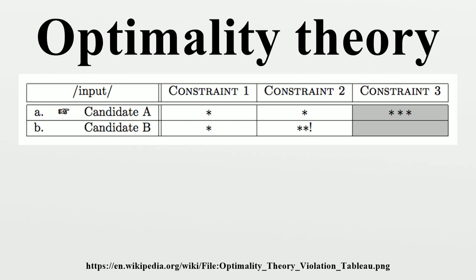The tableau for cat+Z contains rows with a single W and a single L. This shows that AGREE, MAX, and DEP must all dominate IDENT; however, no ranking can be established between those constraints on the basis of this input. Based on this tableau, the following ranking has been established: AGREE, MAX, DEP >> IDENT. The dish+Z tableau shows that several more rankings are necessary. The second row reveals that either *SS or AGREE must dominate DEP. The third row shows that MAX must dominate DEP. The final row shows that either *SS or IDENT must dominate DEP. From the cat+Z tableau, it was established that DEP dominates IDENT, meaning that *SS must dominate DEP.